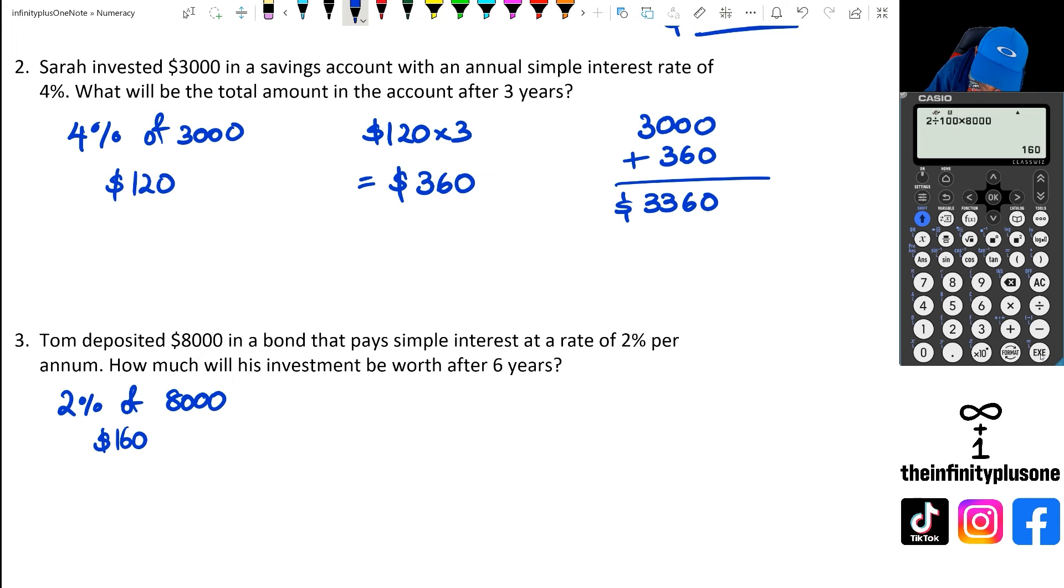And then what we're going to do is with that 160, we are going to look at for six years. So 160 times six, that's over six years, we get $960. And then finally, after six years, we're going to have to add 8,000 plus 960, which equals $8,960.